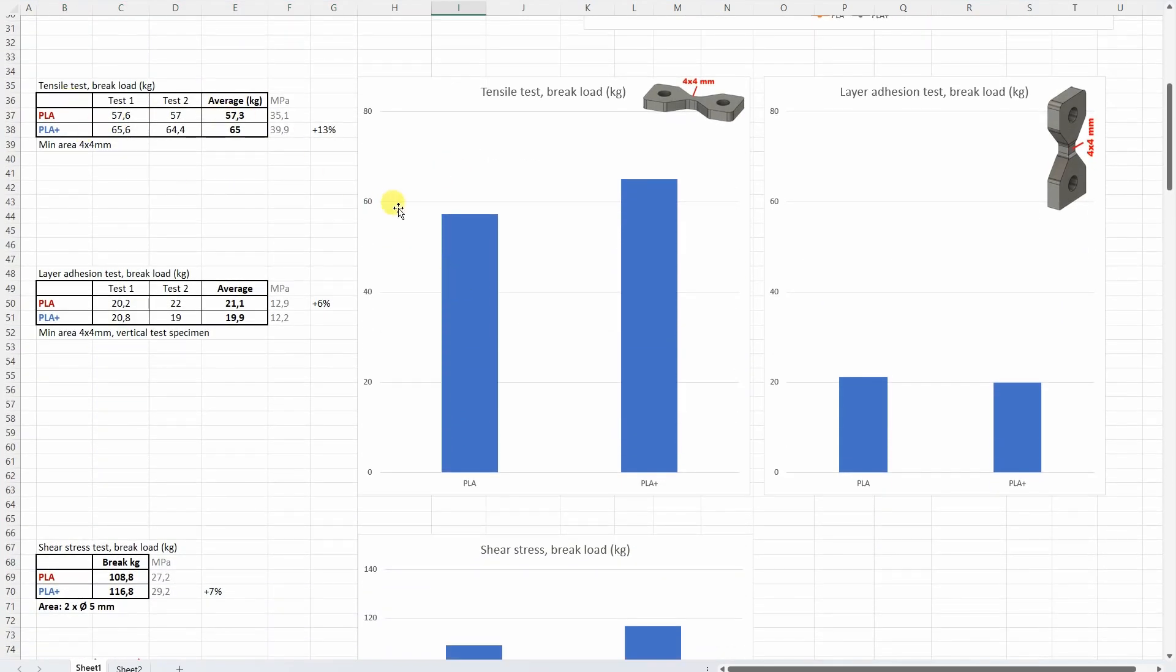Tensile pulling test and well, the advantage was with the PLA Plus. It was stronger a little bit, 13%. And this is the layer adhesion. You can see this is the same scale on these two graphs. And 20 kilograms, and I consider this as acceptable. As I always say, 20 kilograms for this 4x4 millimeter cross section is acceptable. But for example, their Polylite PLA broke about 40 kilograms. So I believe, and I was expecting, a little bit stronger layer adhesion with the PLA Plus.